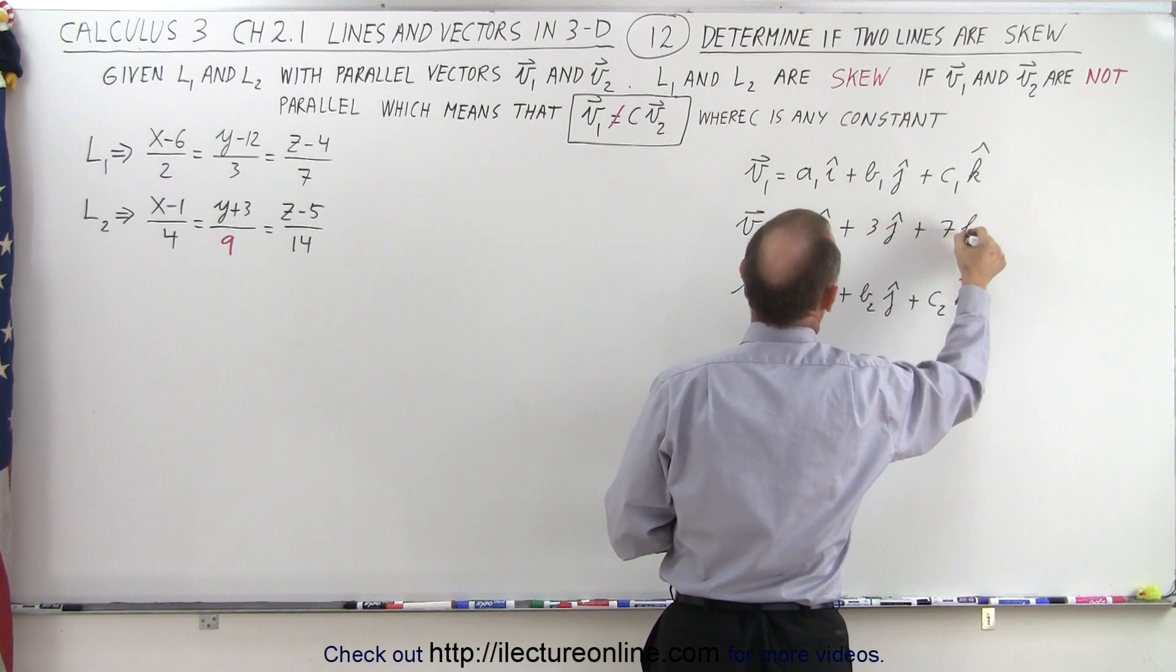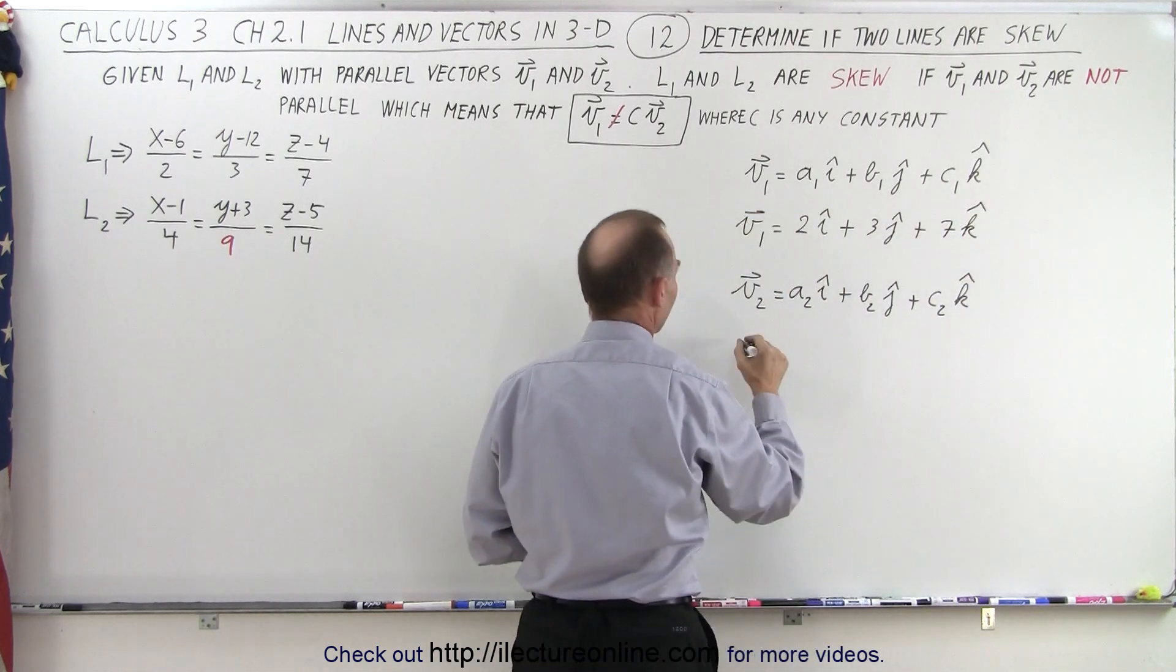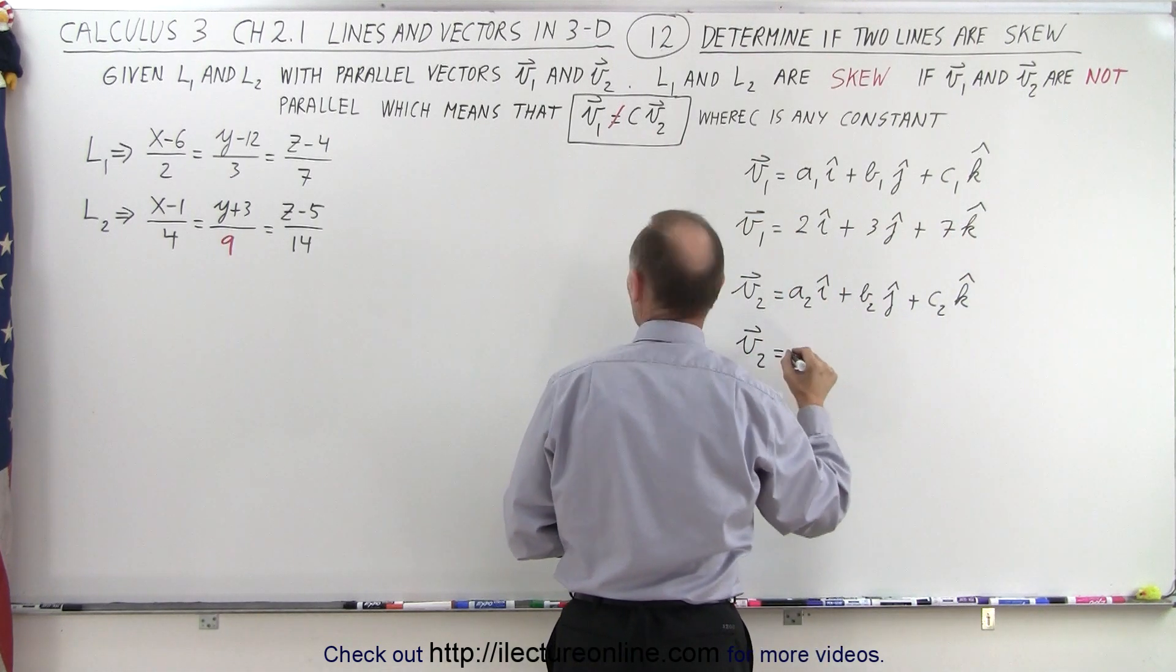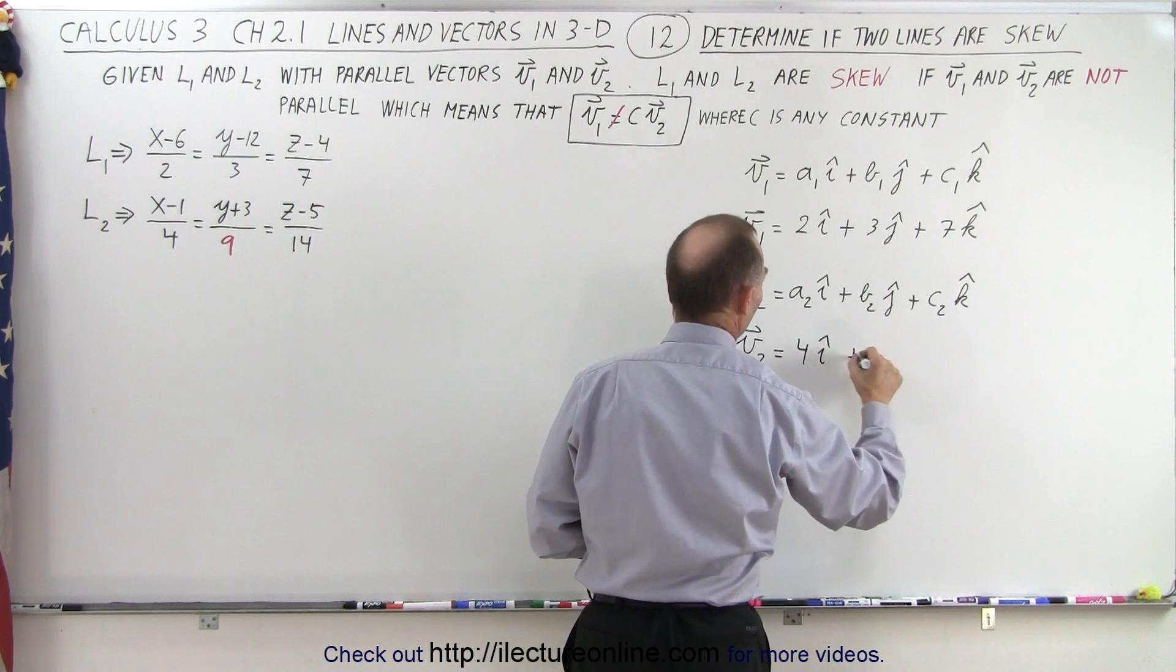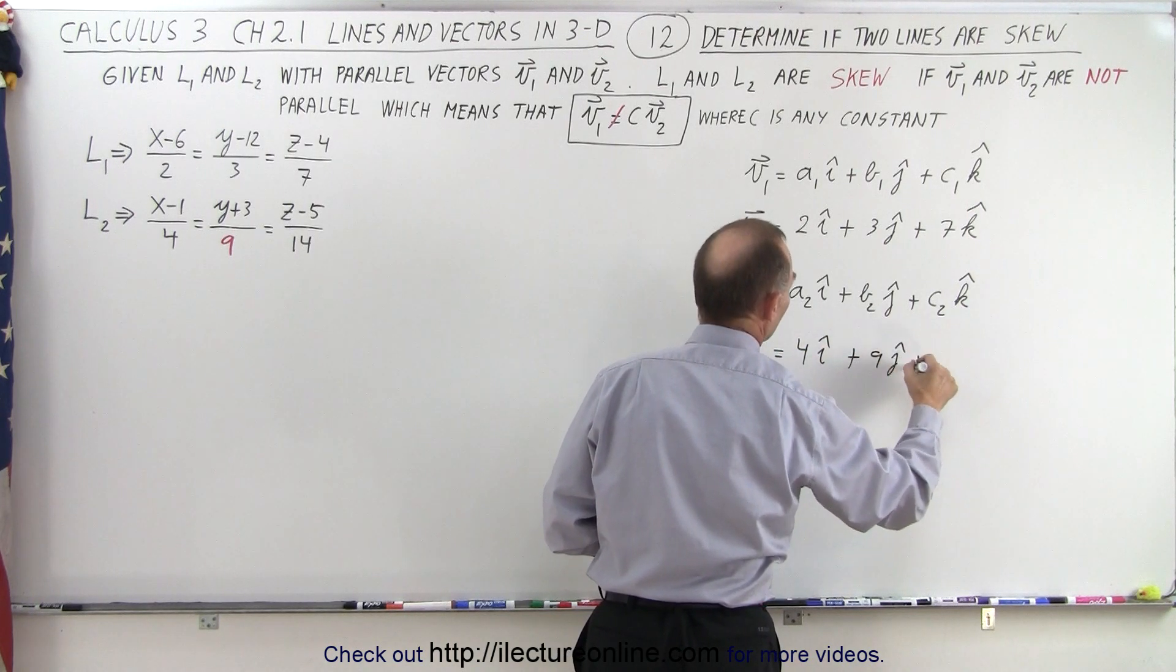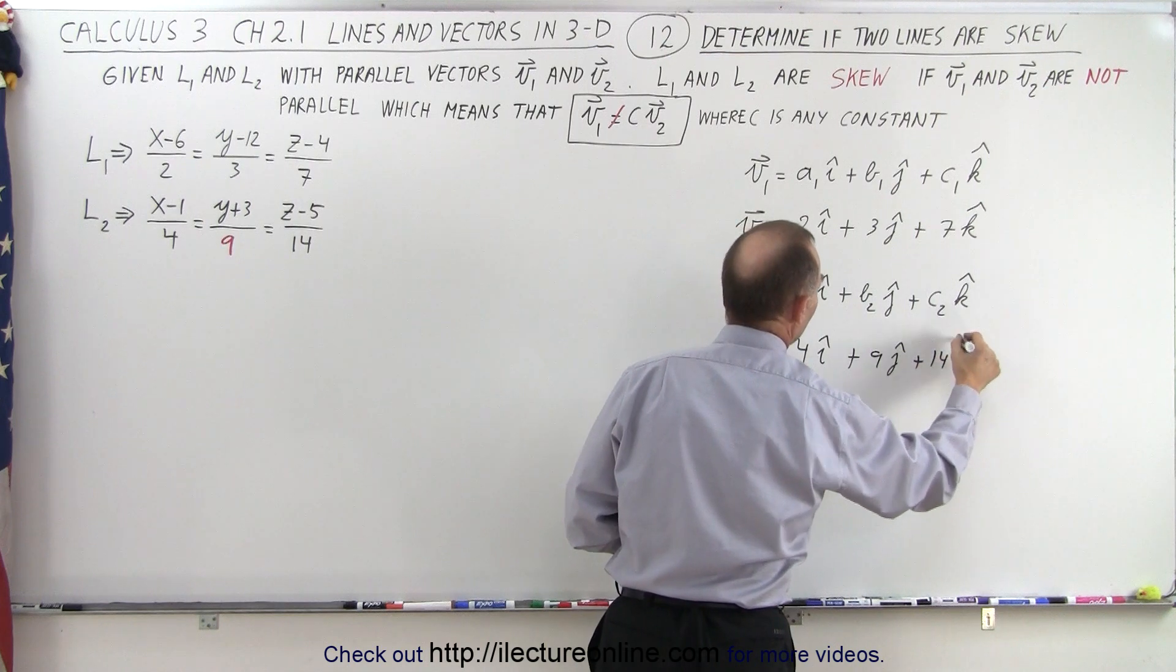We did the same for V2. So V2 is equal to 4 in the I direction, plus 9 in the J direction, plus 14 in the K direction.